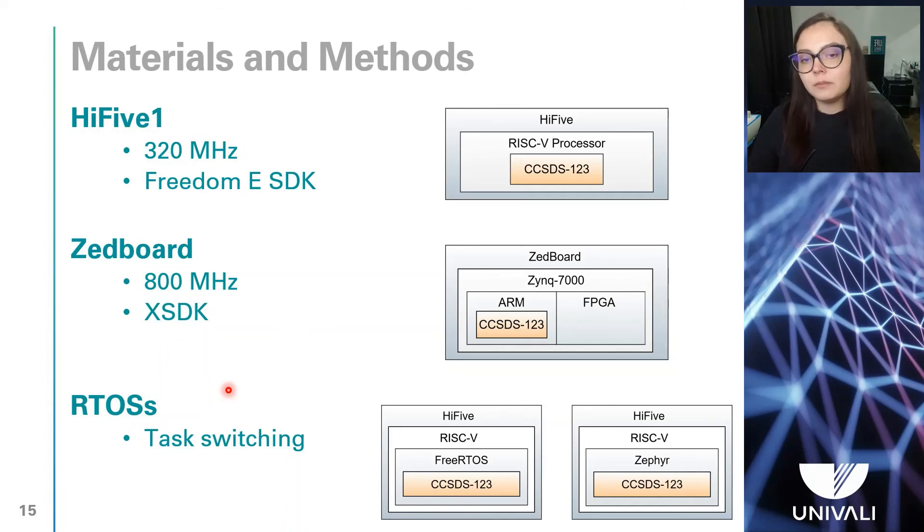Also, in order to assess the impact of the compressor over an operating system layer abstraction, we evaluated the compressor's execution over two real-time operating systems, the Zephyr and FreeRTOS, when running on the RISC-V processor. To consider the cost regarding the task switching, we defined two tasks when using the RTOSs.